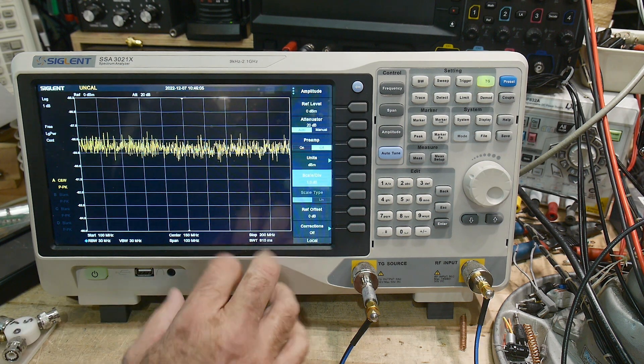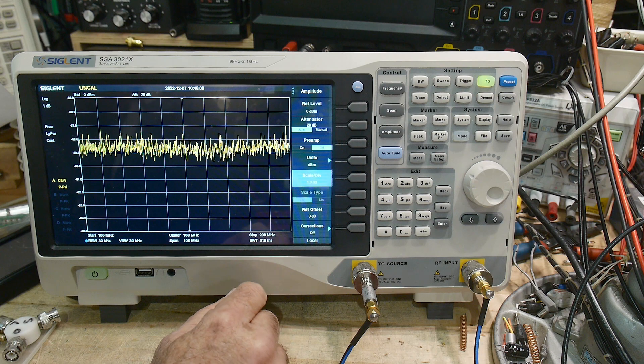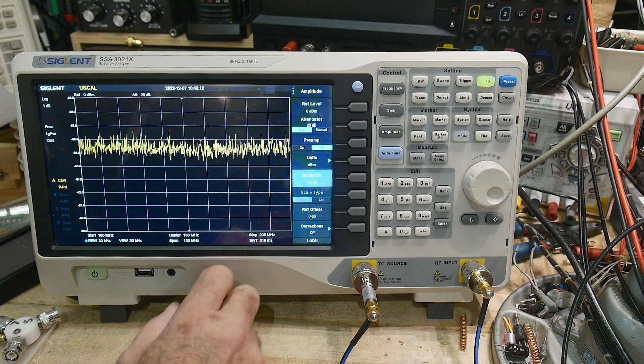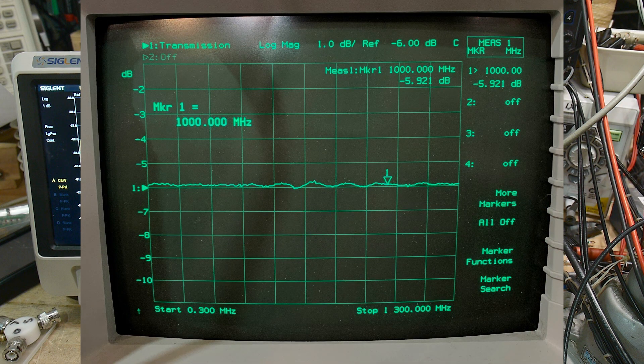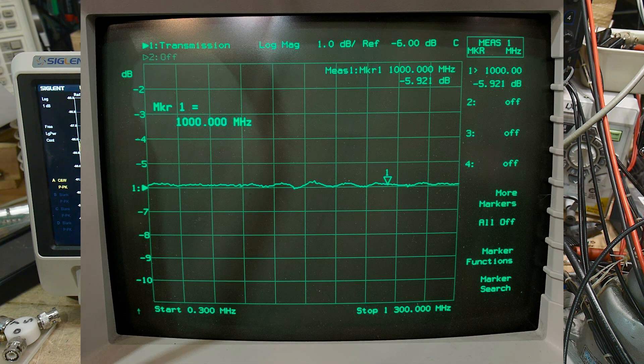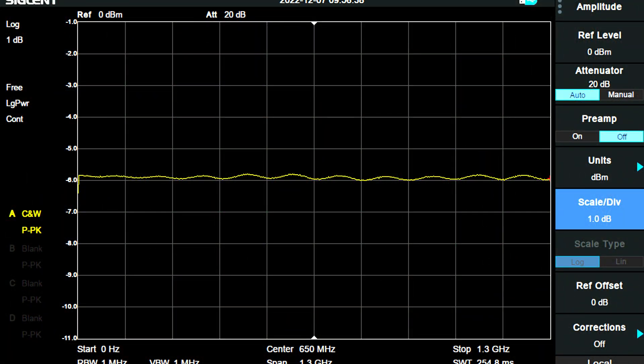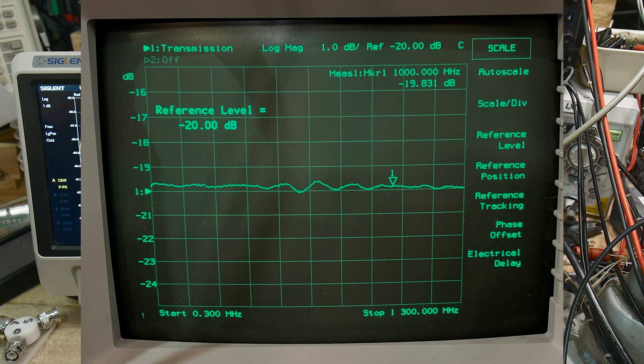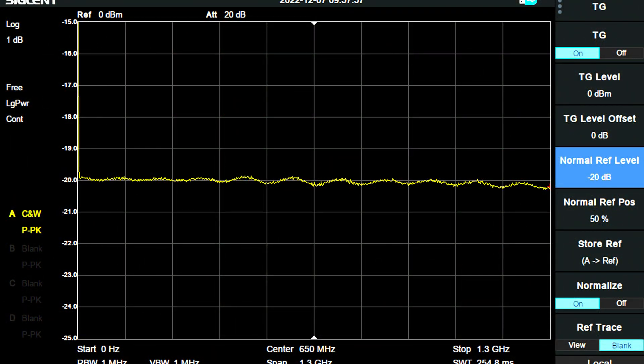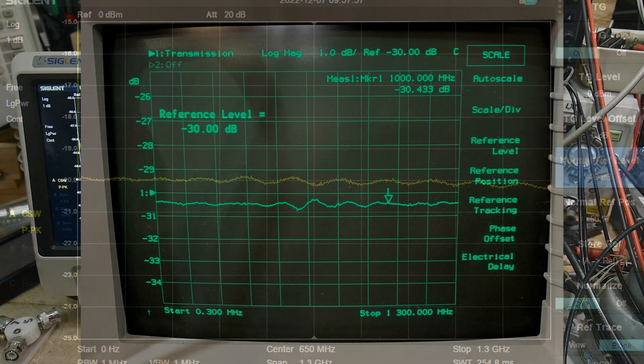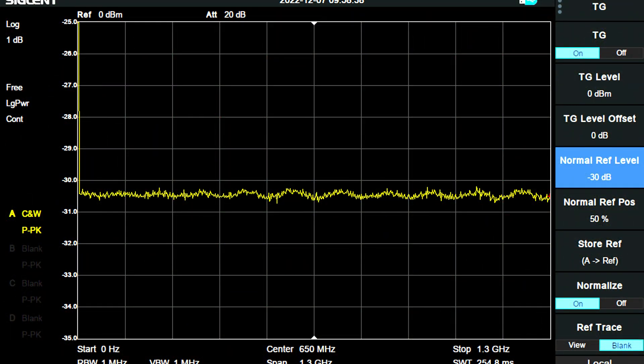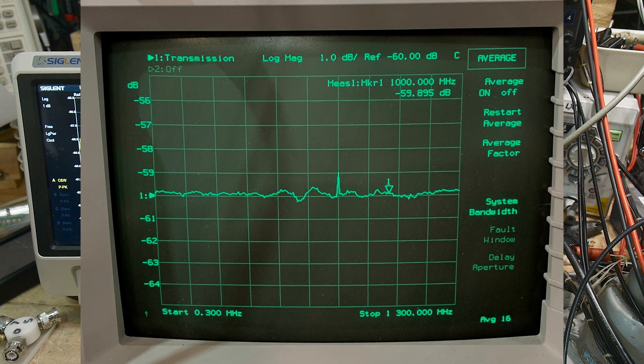At the end here, I'll show you some screen captures between my HP VNA and this instrument. This is the 6 dB attenuator. Here's the 20 dB attenuator. Here's the 30 dB attenuator, and then finally the 60 dB attenuator.